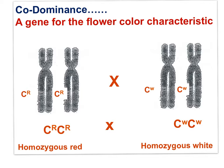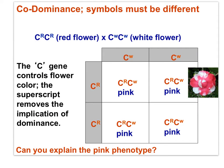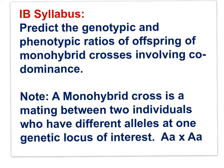The use of the superscript removes the implication that one allele would mask the presence of the other, as in the dominant recessive heredity pattern. Using a Punnett square to show the results, the homozygous red flower crossed with the homozygous white flower produces offspring all with the heterozygous genotype and a pink phenotype. Here is the relevant IB syllabus statement.